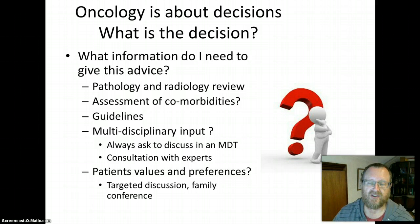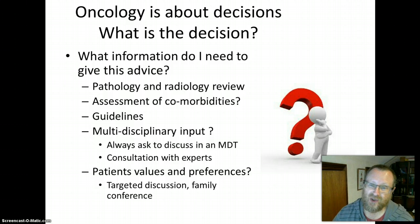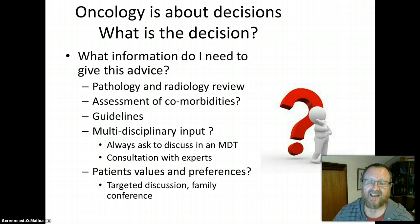Oncology is about decisions. The question to ask is: what's the decision, and what information do I need to make it? There are a variety of tools for this. It's important to review pathology and radiology to understand exactly what tumour you're treating and what sites of disease are involved. If a patient has a comorbidity — such as coronary artery disease affecting fitness for chemotherapy — you may need to assess that. If you don't know the treatment for a particular cancer, you can always consult guidelines, showing that you know where to look.